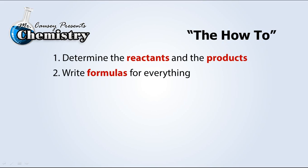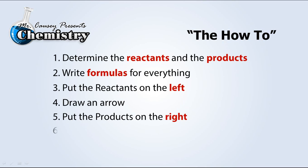Let's review how to write a chemical equation. One, determine the reactants and products, then you write formulas for everything, you put the reactants on the left and draw an arrow, then put the products on the right, and then balance.